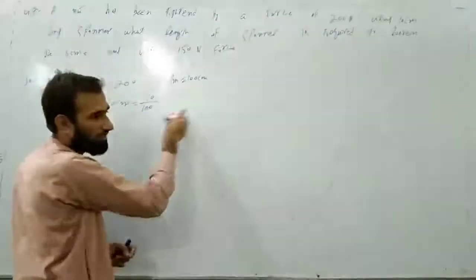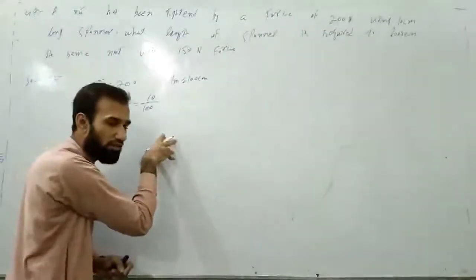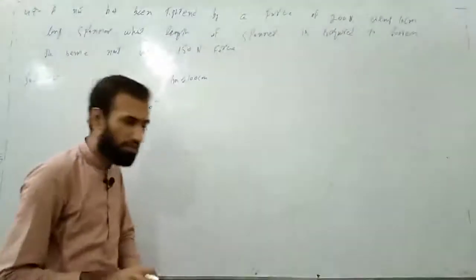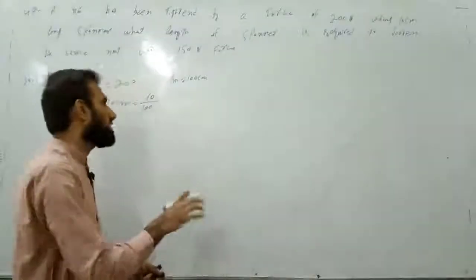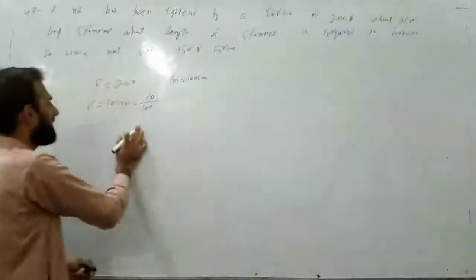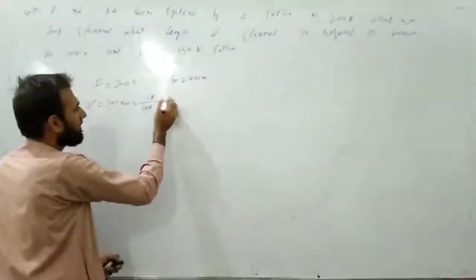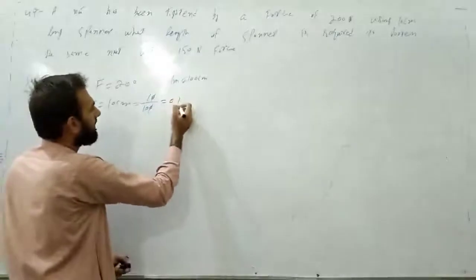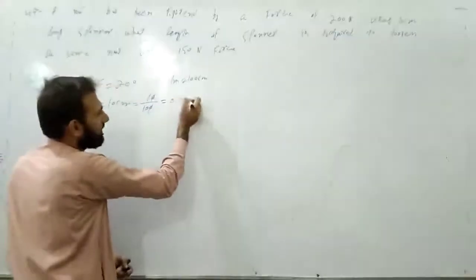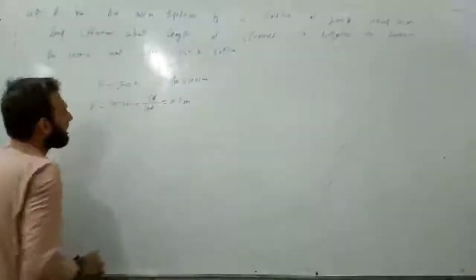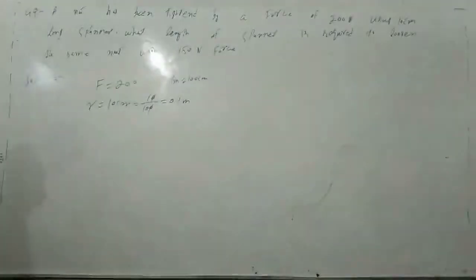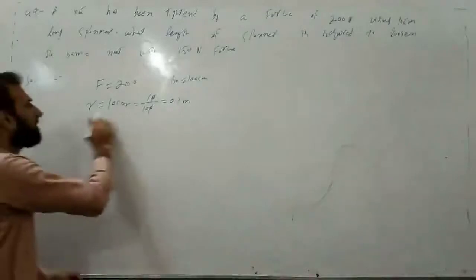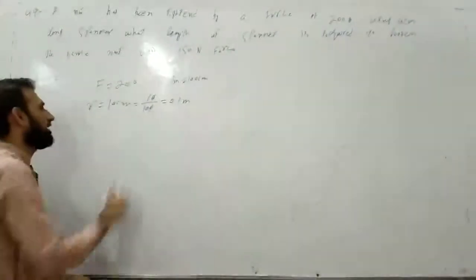When going from centimeter to meter, we divide. Centimeter is a smaller quantity, meter is larger — going from small to large means dividing. 10 divided by 100: the zeros cancel, giving 1 divided by 10, which is 0.1. So the answer is 0.1 meter. Now we have R equal to 0.1 meter.